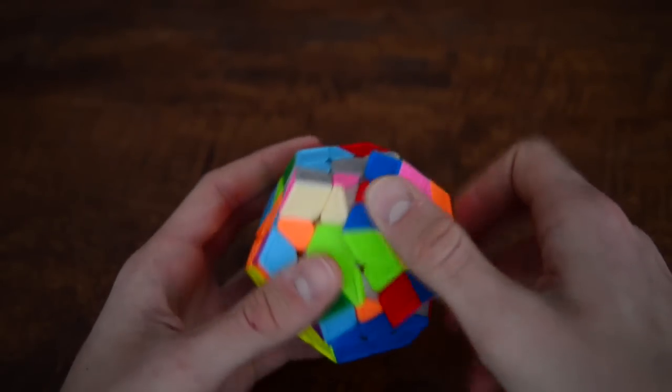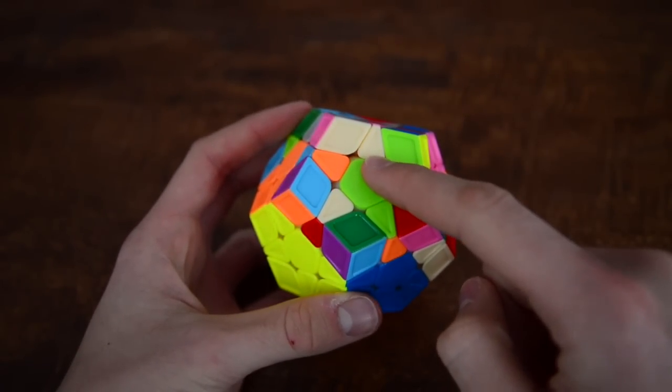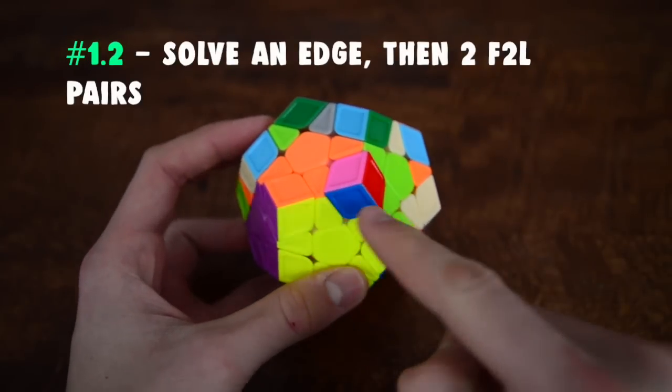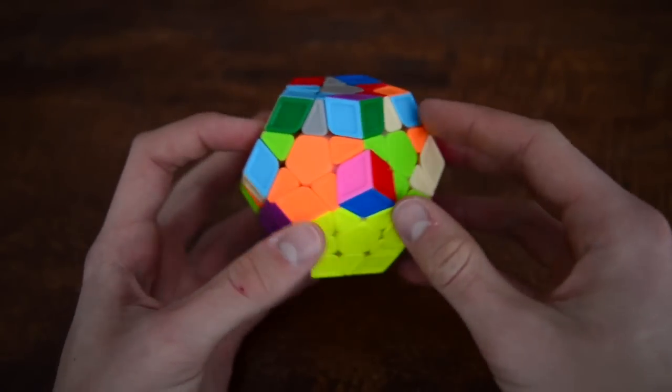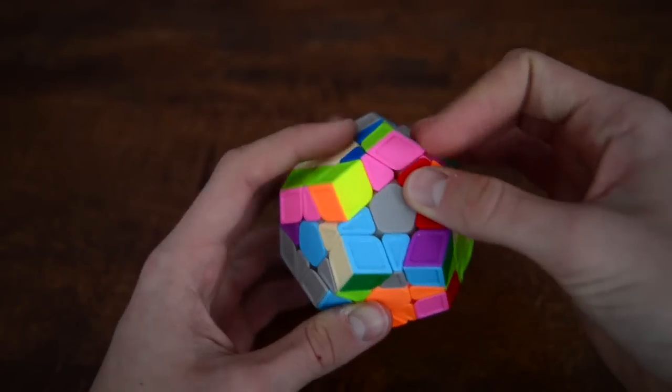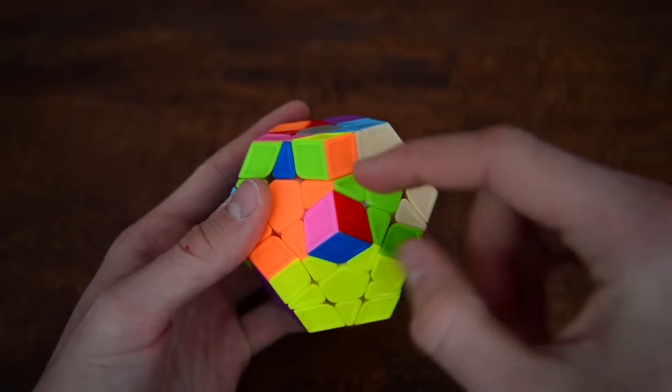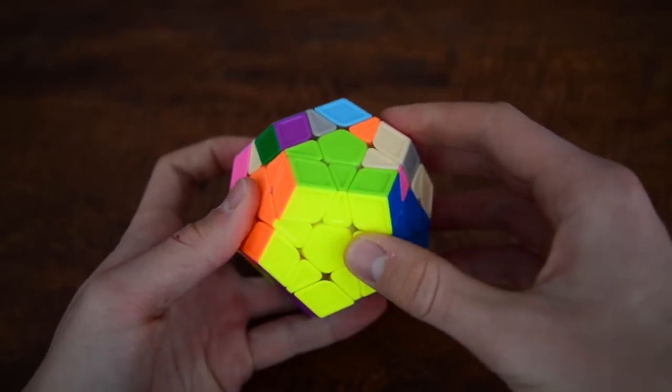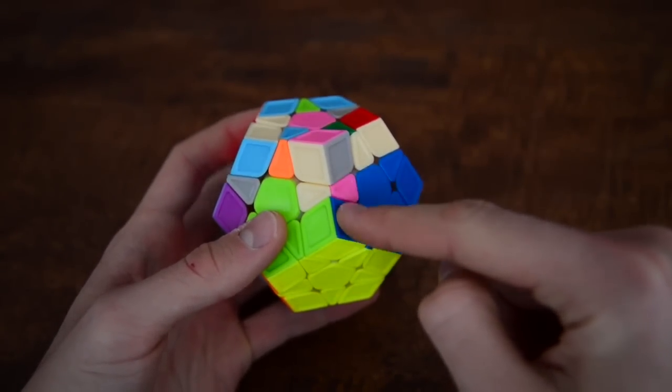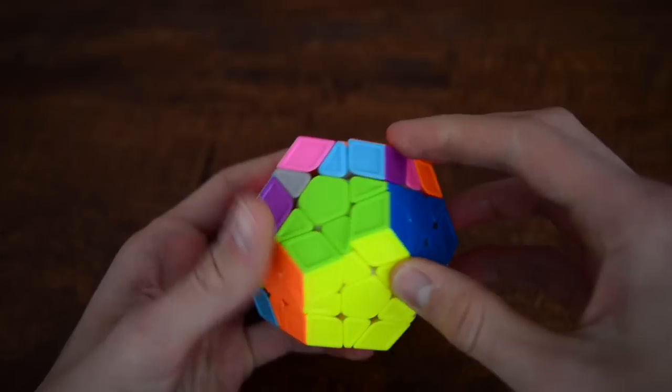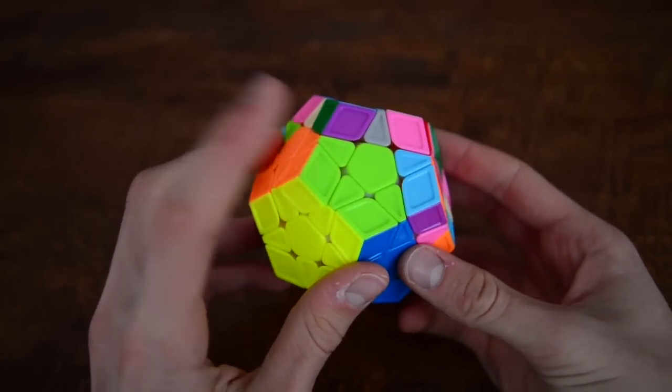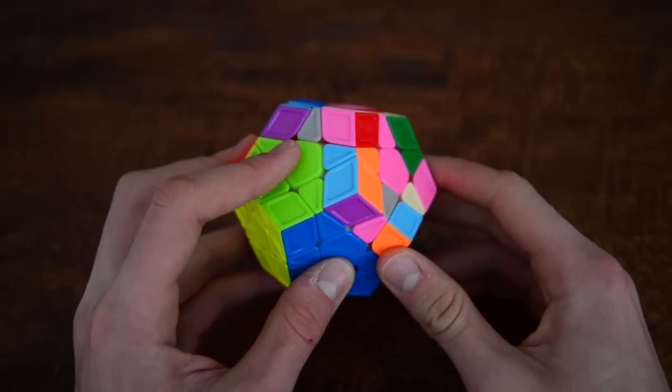So this next up is the green center. So I usually solve this edge first and then do these two F2L pairs. So let's do this F2L pair now. Search for the corner. It's right here. Let's fill in this F2L pair. Okay. And now let's fill in this F2L pair. Okay. So now we have the green and the orange S2L center done.